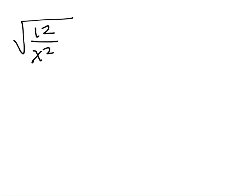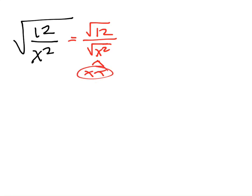I want to simplify the square root of 12 divided by x squared. Same thing — I can break up the square roots. I want to get rid of the square root in the denominator. But since x squared is a perfect square, I could just simplify it directly: the square root of x squared is just x. So square root of 12 over square root of x squared becomes square root of 12 over x — I've gotten rid of the square root in the denominator. I could have rationalized it by multiplying by square root of x squared over itself, but that would have been more work.